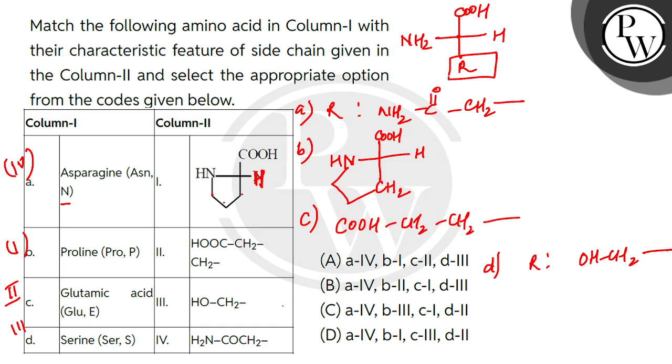So A will be 4, B will be 1, C will be 2, and D will be 3. So the other option is correct.